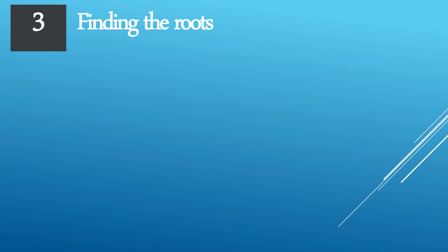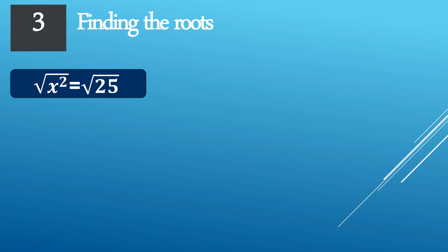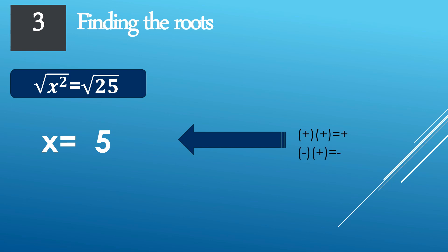Recall the guides from earlier. One of them states that if c is greater than zero and not negative, then there are two possible solutions. The square root of 25 is plus or minus 5. A positive times a positive gives a positive number, and a negative times a negative also gives a positive number. Therefore, this equation has two real solutions.